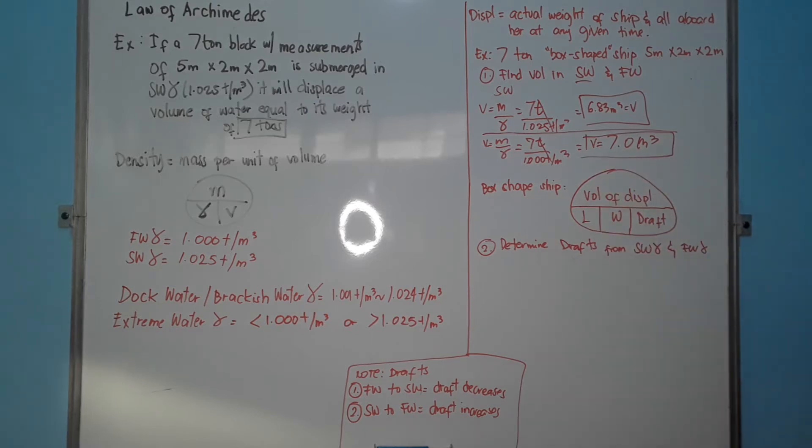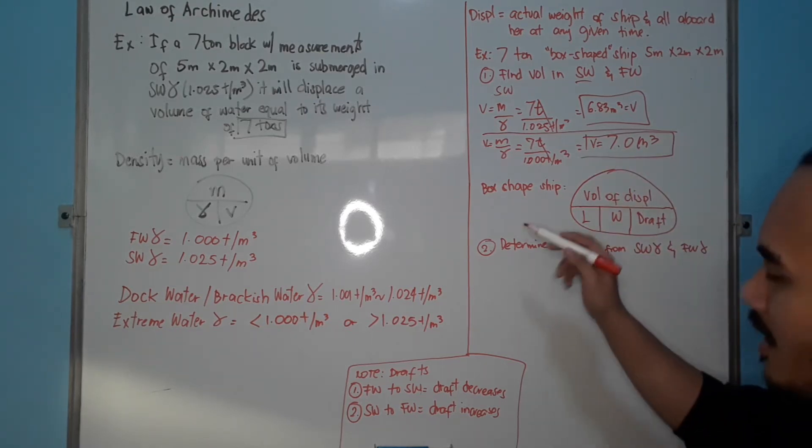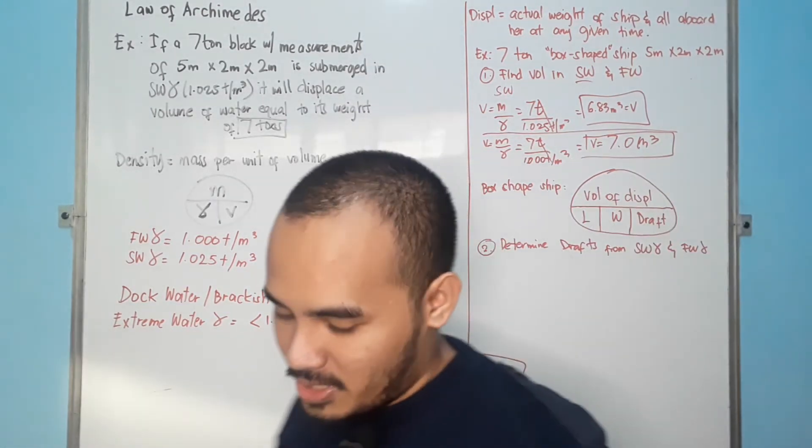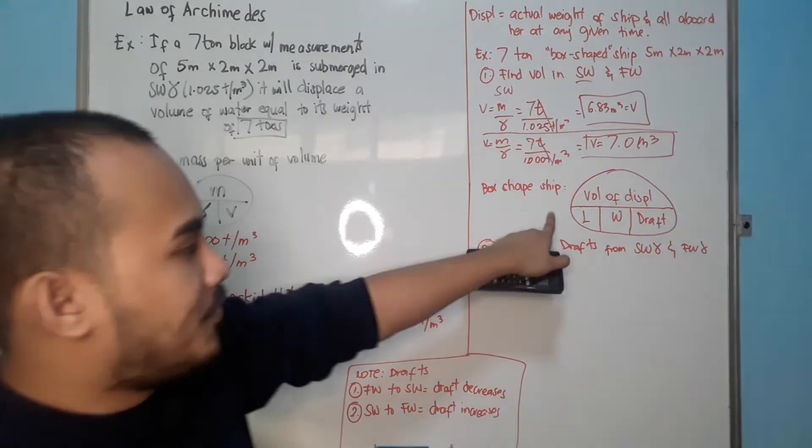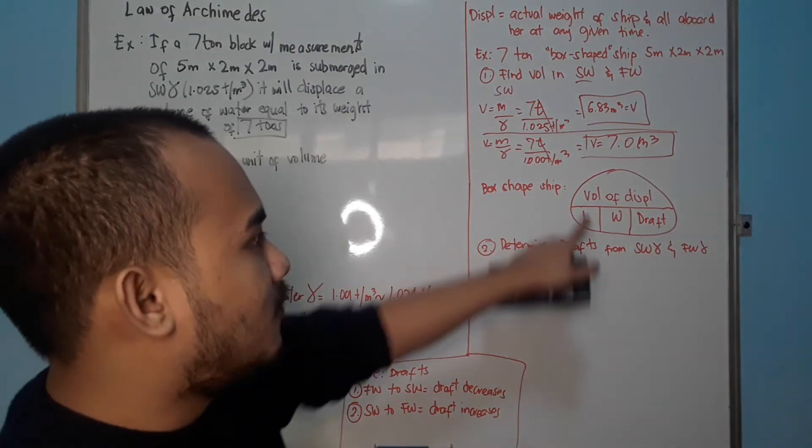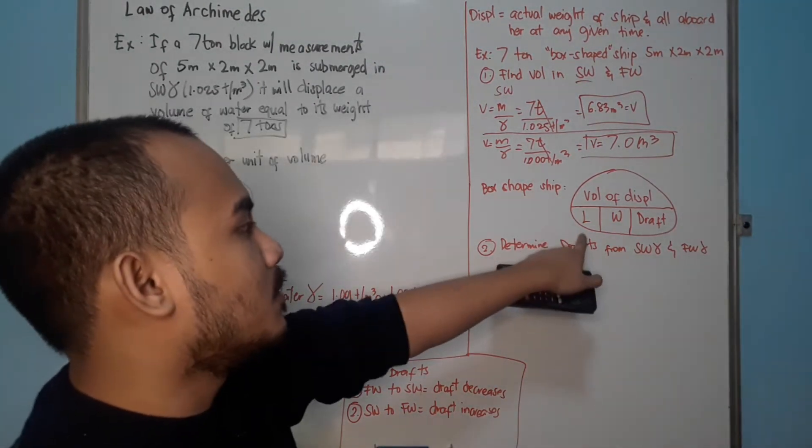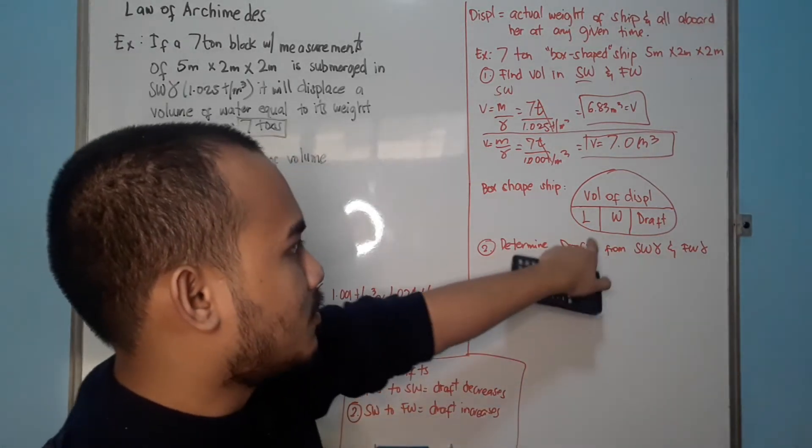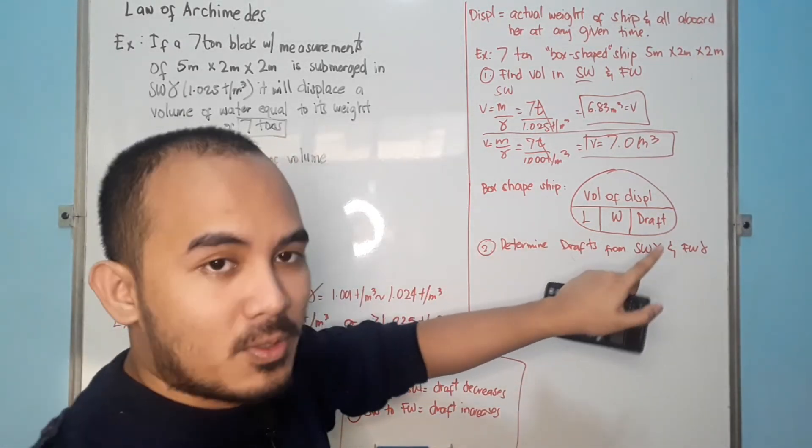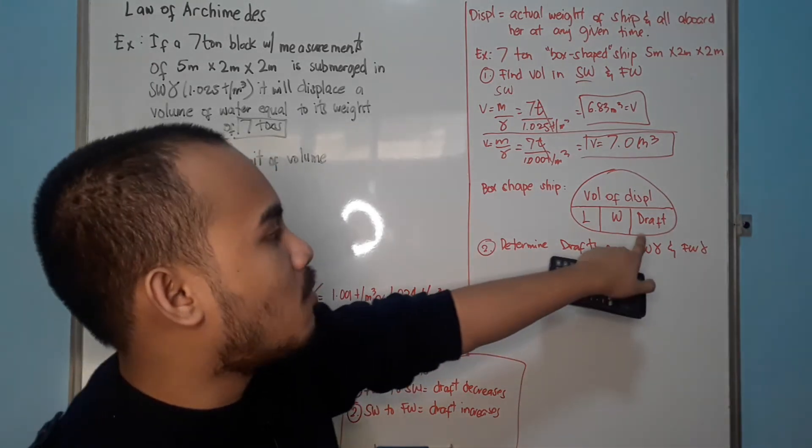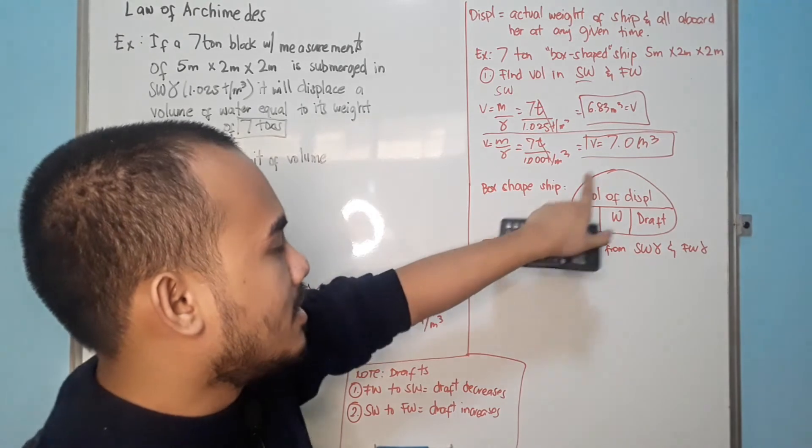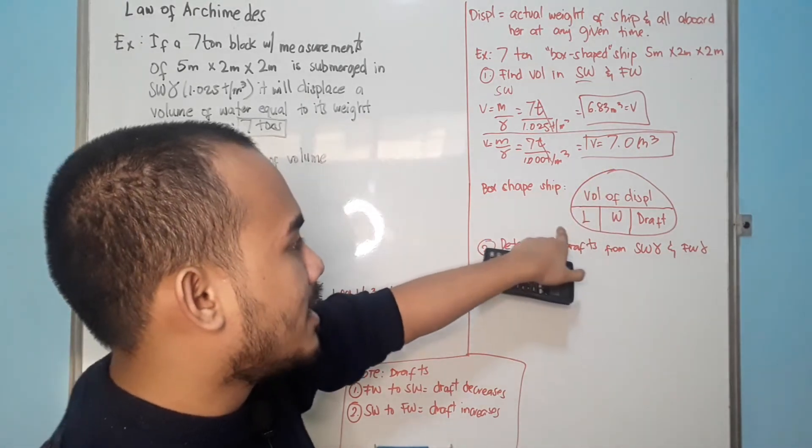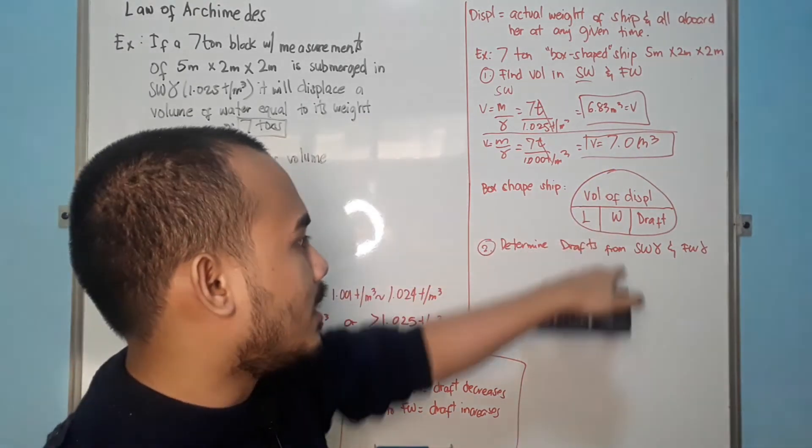Now, in box-shaped ships, again, we focus on box-shaped ships, we don't focus first in ship-shapes. If you want to find the volume of displacement, you have to multiply all of this. Length times width times draft. You have to multiply all of this. But, if you want to find the draft, volume as your numerator, and then divide it by the product of your length and width.